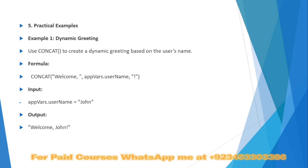The next category is practical examples. First we are discussing dynamic greeting — we use CONCAT to create a dynamic greeting based on the user's name. The formula is CONCAT('Welcome ', pageVariable.appUserName, '!'). For example, if the user inputs 'John' for the username, the system will return 'Welcome John!'.